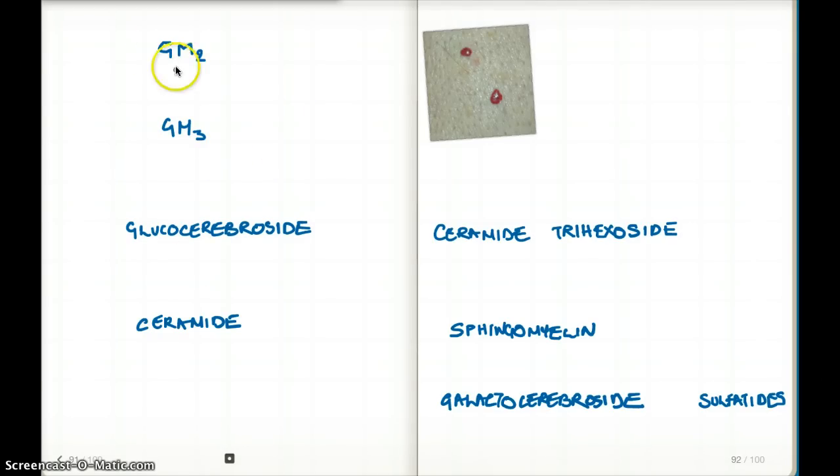I have GM2. GM2 can become GM3 using the enzyme hexosaminidase A. When this enzyme is not working, we have Tay-Sachs disease.